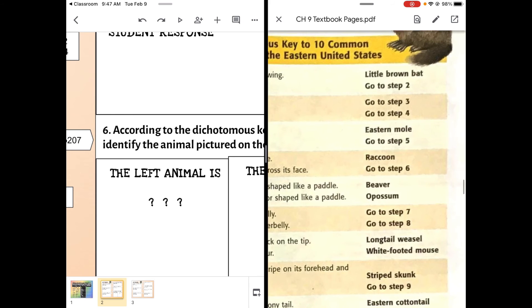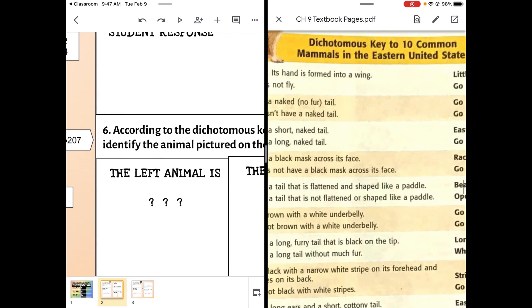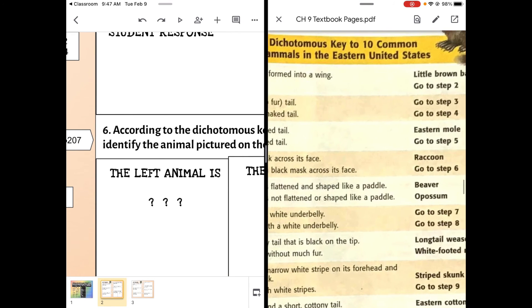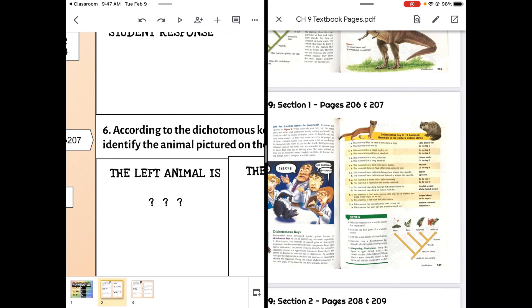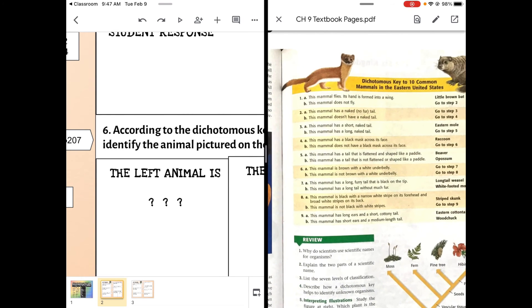And so we're going to go to a different step, step eight. And so you would keep going. So that's how we use a dichotomous key. It's paired statements. One of the statements has to be true. You follow the statements until you get an identification.